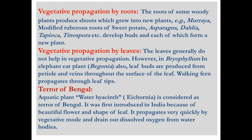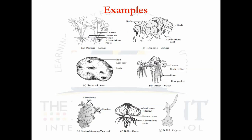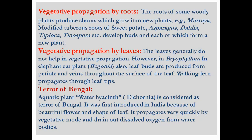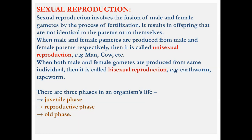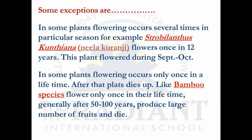Today we discussed the remaining portion of asexual reproduction — vegetative propagation, which is a characteristic feature of plants only and does not take place in animals. We also discussed artificial vegetative propagation, then started sexual reproduction in plants. The total lifespan divides into juvenile phase, reproductive phase, and senescent phase. In flowering plants there are three types: annuals, biennials, and perennials. Some exceptions — especially Strobilanthus kunthiana (Neelakurinji) — are most important and frequently asked in board examinations.